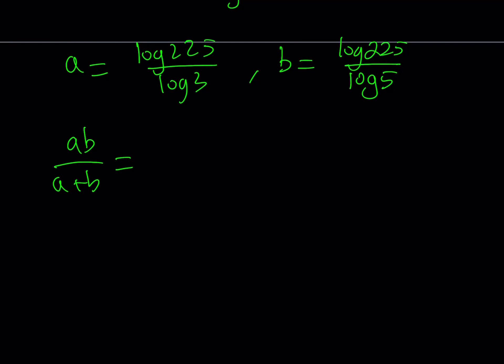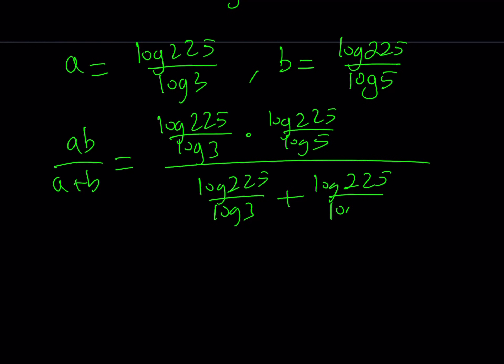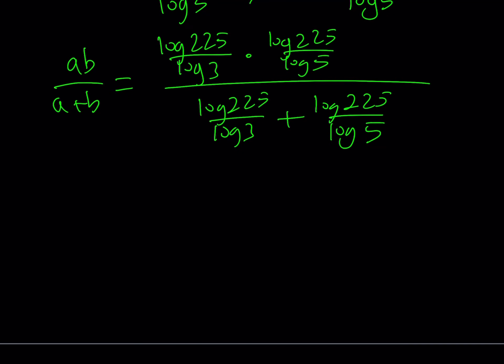Now ab means a times b, so we're going to multiply these expressions: log 225 over log 3 multiply by log 225 over log 5. And at the bottom we're supposed to add them: log 225 over log 3 plus log 225 over log 5. In the numerator, I can just multiply those two quantities. That means log 225 squared divided by log 3 times log 5.